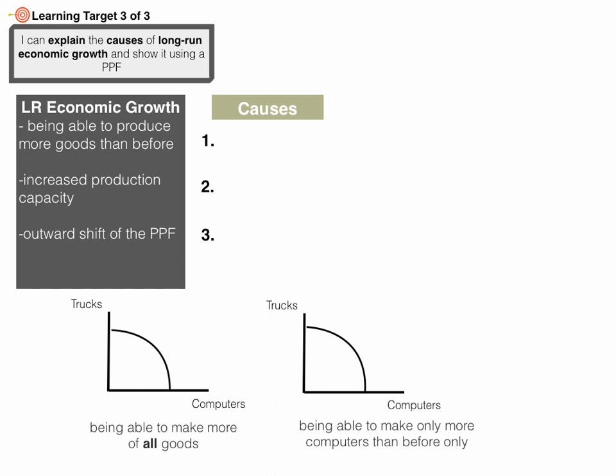There are three causes for long-run economic growth. The first is an increase in the amount of resources available. If you have more resources — more land, labor, or capital than before — then you'll have the ability to make more goods and services than before. Whether you actually do or not doesn't matter at this point; it's just having the ability to.